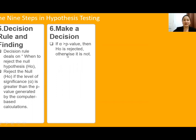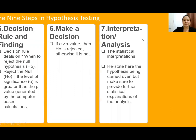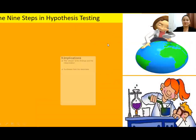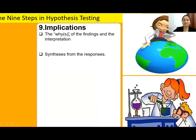Number six: make a decision. If your alpha is greater than the p-value, then the null hypothesis is rejected; otherwise, you accept it. Number seven is the interpretation or analysis — this is a restatement of the hypothesis being carried out. It can be the null or the alternative, but make sure to provide further statistical explanations of the analysis. Number eight is the conclusion, which answers the main statement of the problem. Remember, there is no use of statistical form and no data in your conclusion. Number nine is the implications — the why's of the findings and interpretation, synthesized from the responses.